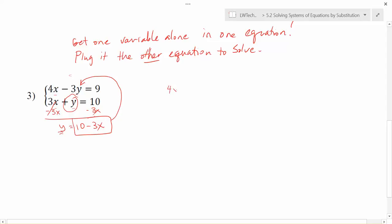So when I do that, I'm going to have 4x minus 3 times, instead of y, I'm going to plug in 10 minus 3x equals 9. And now I can go ahead and solve for x. Make sure you use the distributive property because we need to get rid of those parentheses. All of that y value needs to get multiplied by that minus 3. So here I'm going to have 4x, then I'm going to have a minus 30 and a plus 9x, because it's a negative 3 times a negative 3x.